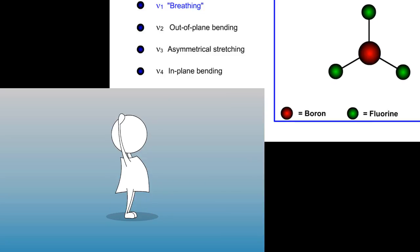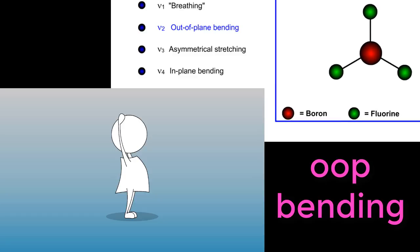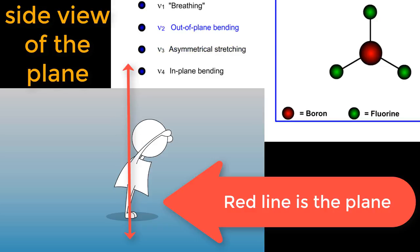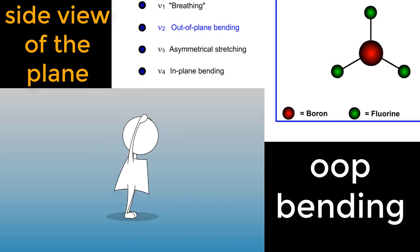Next, out of plane bend. This is my body, imagine it's on a plane. So during the bending, I'm out of the plane now from the front, out of the plane now from my back. So this is out of plane bending.